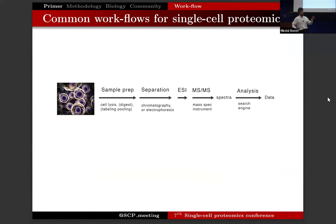Most protein analysis of single cells by mass spectrometry is done by what is known as bottom-up mass spectrometry. That requires preparing the samples, which has been a major challenge and the big focus of technology development in the field for years — how do we prepare samples from tiny cells while minimizing contamination and maximizing efficiency of delivery? Then proteins are digested to peptides, peptides are separated, and the quality of separation is incredibly important. You're going to hear a few talks during this conference from both academic leaders in this area.